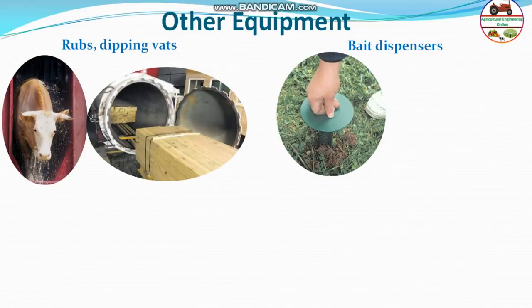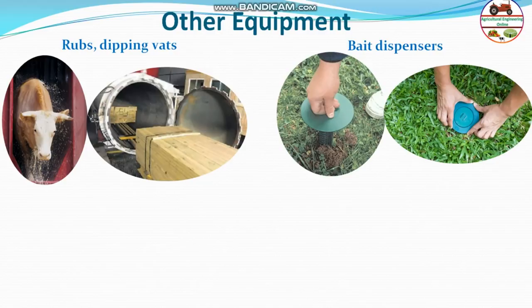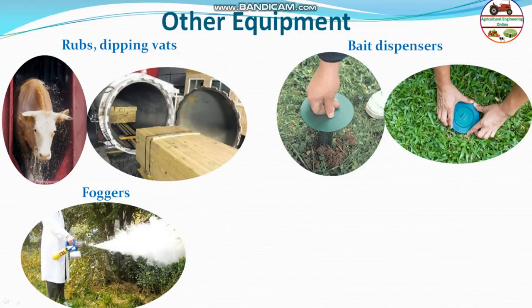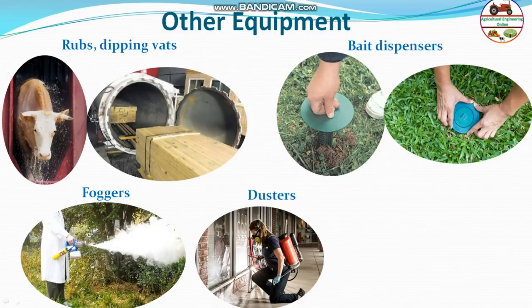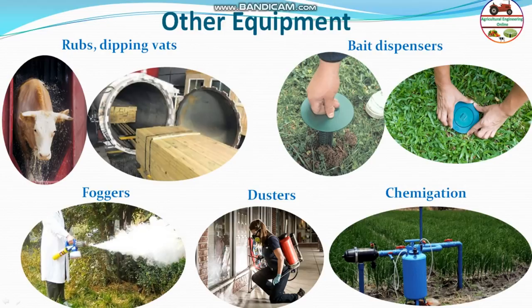Bait dispensers are used to dispense bait for rodents or other pest animals. Foggers generate fogs for space application. Dusters are used to dust small areas to control termites or insects damaging wood or household items. Chemigation mixes the correct amount of chemicals with irrigation water continuously using a venturi arrangement so chemicals are applied along with the irrigation water going into the field.